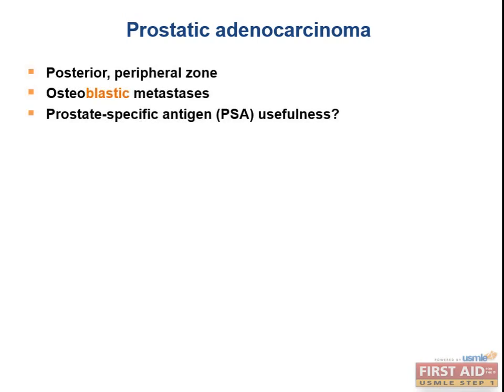Prostatic adenocarcinoma is in the posterior/peripheral zone, palpated on digital rectal exam — not the transitional or periurethral zone. The highest-yield point about prostate cancer is that it causes osteoblastic metastases — an x-ray will look hyperdense, very white, indicating increased bone density. Lung cancer causes osteolytic metastases — hypodense, black lesions, holes in bone. Multiple myeloma also causes lytic lesions. Breast cancer can have both. Osteoblastic metastases specifically are associated with prostate cancer.